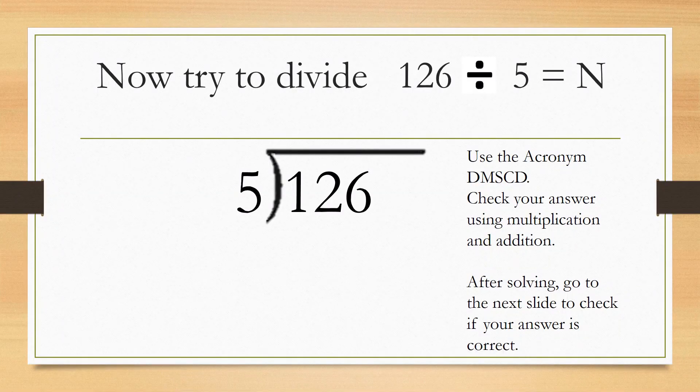Now it's your turn. Try to divide 126 by 5. Use the acronym DMSCD. Check your answer using multiplication and addition. After solving, go to the next slide to check if your answer is correct.